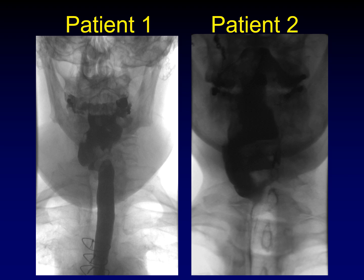Here's a good opportunity to pause this video and see if you can decide what's going on with each of these two patients. The point of this exercise is that there are two different ways to get asymmetric utilization of the piriform sinuses, and you can't tell them apart.